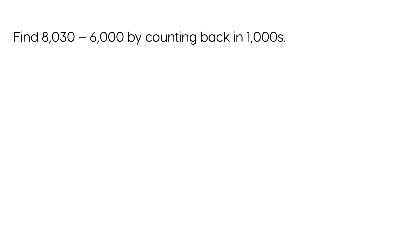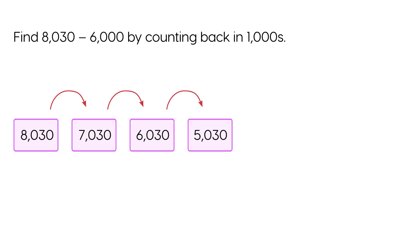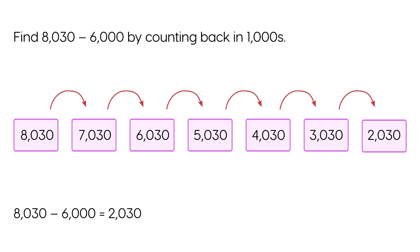Find eight thousand thirty minus six thousand by counting back in one thousands. Eight thousand thirty minus six thousand equals two thousand thirty.